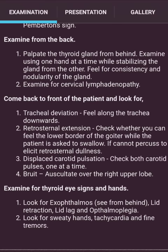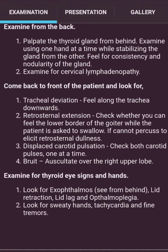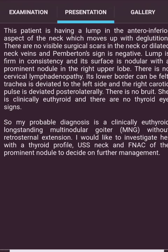If the lower border cannot be felt, elicit retrosternal dullness and feel for displaced carotid pulses — take both carotid pulses one at a time. Auscultate over the right upper lobe. Examine the thyroid eye signs and hands: look for exophthalmos, lid retraction, lid lag, and ophthalmoplegia. Look for sweaty hands, tachycardia, and fine tremors.